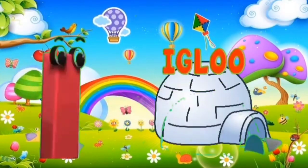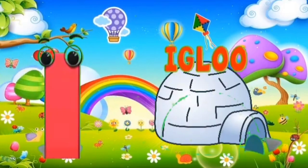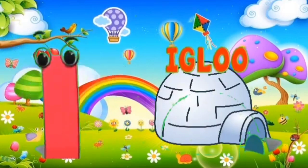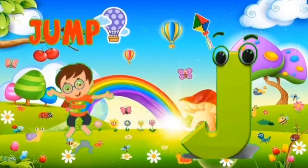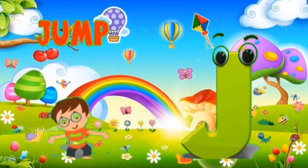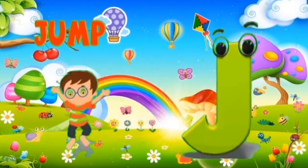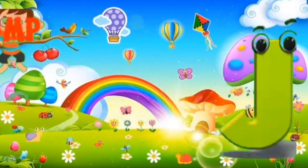I is for igloo. I, I, igloo. J is for jump. J, J, jump.